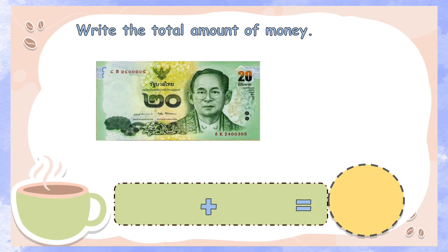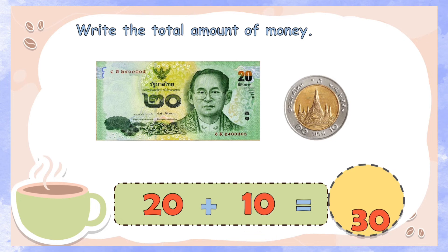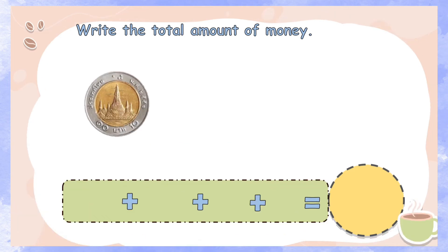20 baht plus 10 baht is equal to 30 baht. Another example.